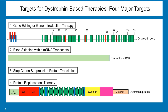A fourth approach being pursued is to purify a normal dystrophin protein in the laboratory — or perhaps a smaller mini dystrophin — and take large amounts of those proteins and directly give them back to patients through an intravenous delivery system in order to provide this missing protein.